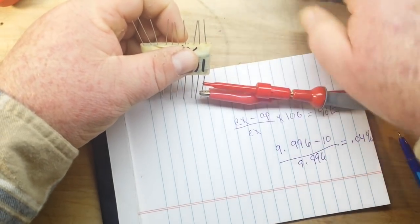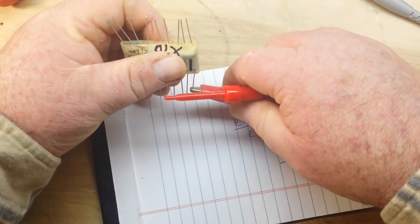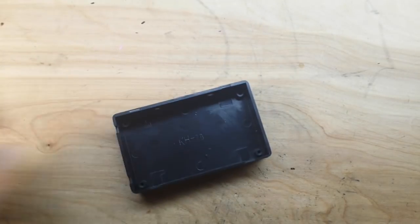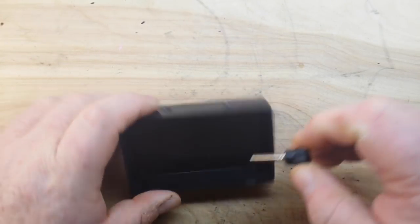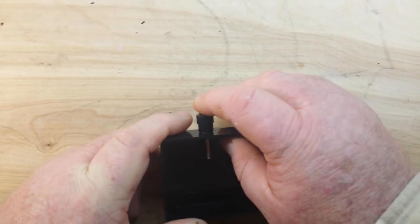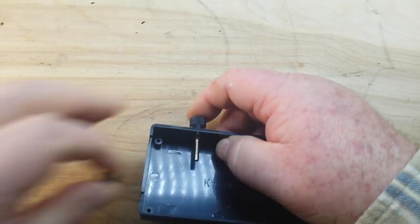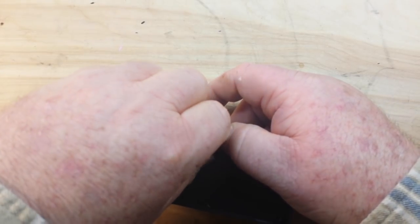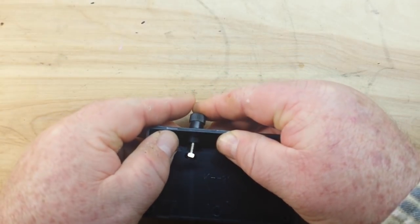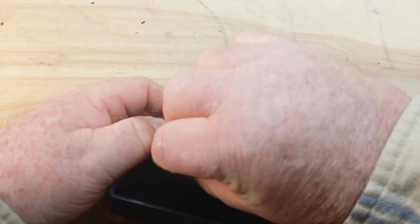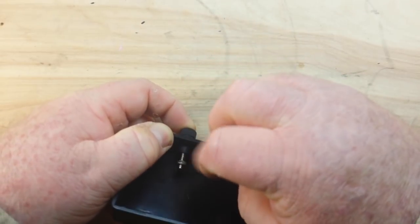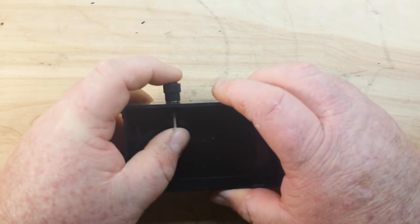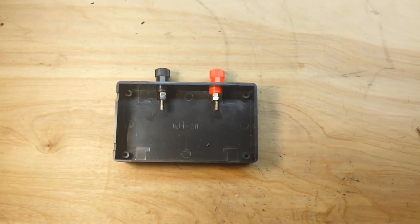So let's disconnect this, and we're going to put together our resistance standard. Okay, I got us a little project box here which I've drilled a couple of holes in, and we'll put in some banana connectors here. Just like that, I'll put two of them on. Alright, our box is constructed.